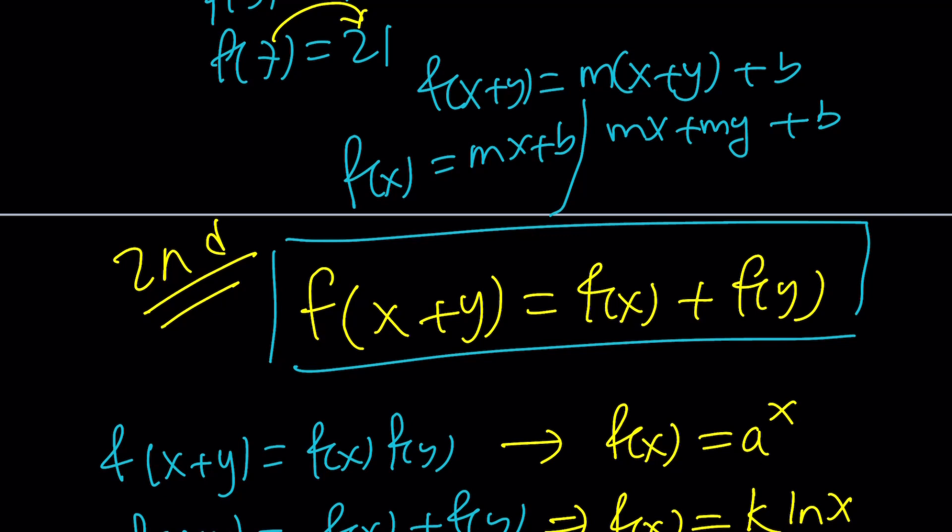And this is supposed to equal f of x plus f of y, which is mx plus b plus my plus b. Wait a minute, b cancels out. This means b has to be 0. In other words, this is a linear function with a 0 y intercept. In other words, our line needs to go through the origin. So f of x equals mx is going to satisfy this type of equation.